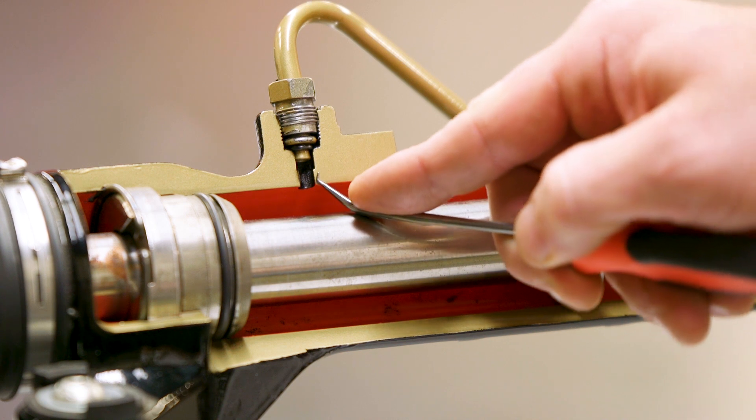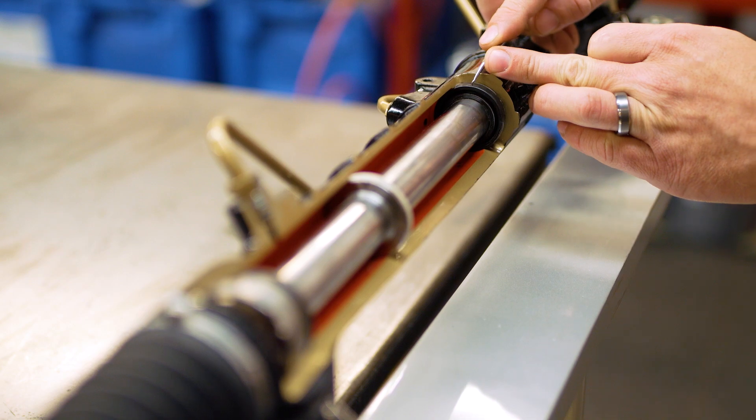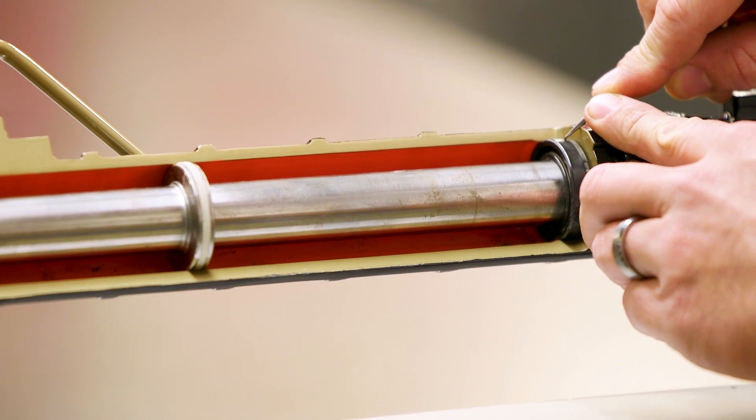This sharp edge right here cuts a groove in your new seal every time. That groove then creates a path for fluid to escape past the outside of your seal right here like this.